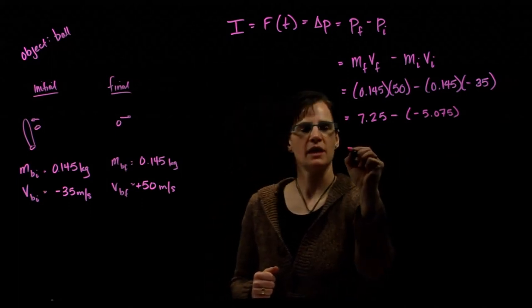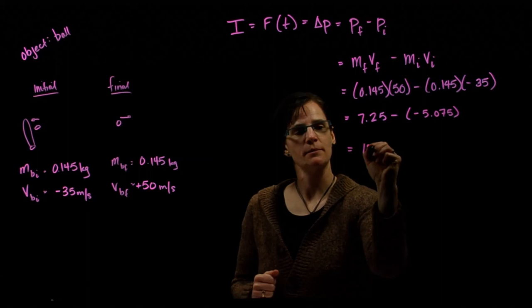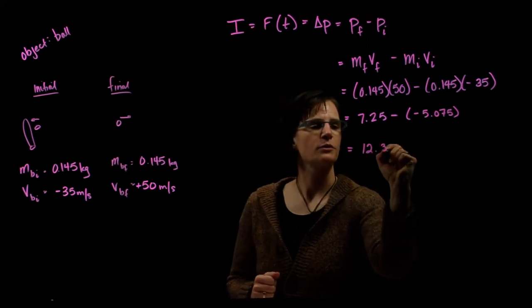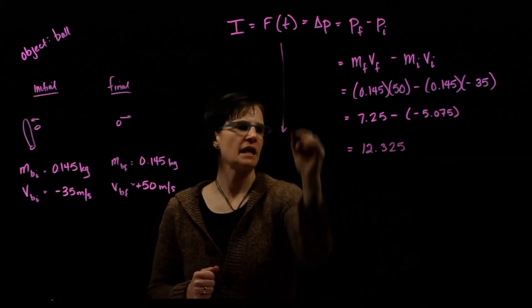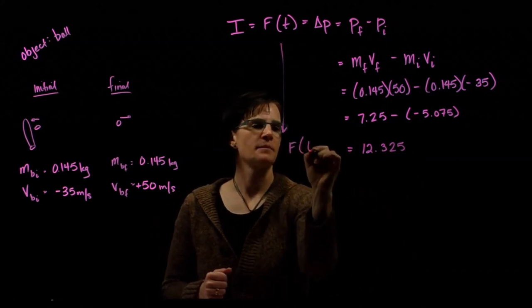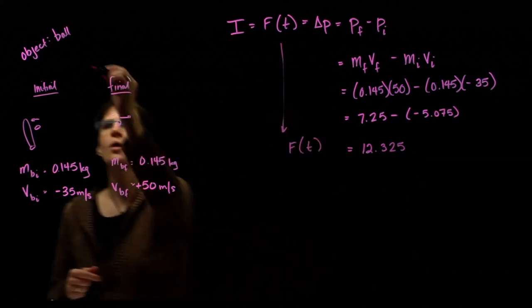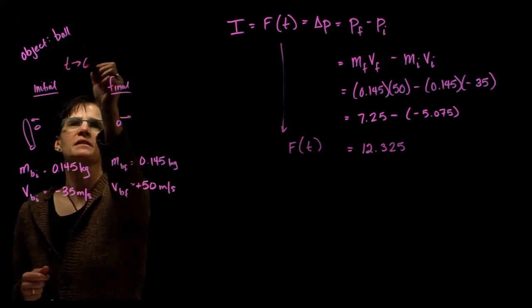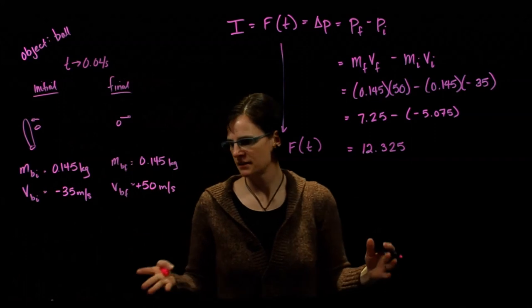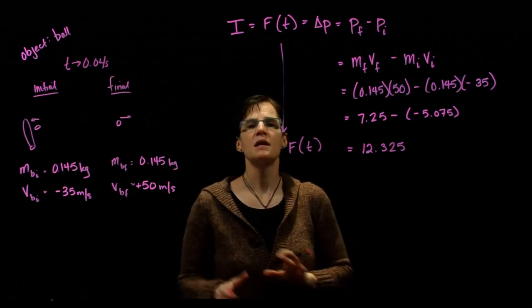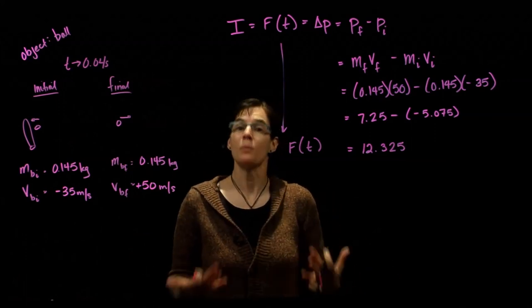And we end up with a momentum change or an impulse of 12.325. Bringing down our force times our time, we're told that this interaction happens in 0.04 seconds. So during that time of 0.04 seconds, the bat is in contact with the ball applying the force.